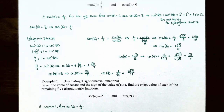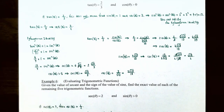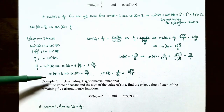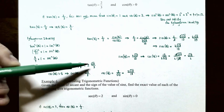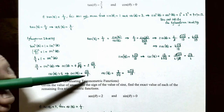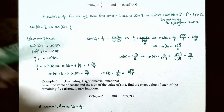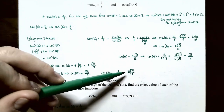Taking the square root of both sides, secant of theta equals plus or minus the square root of thirteen-ninths. Taking the square root of the fraction gives square root of 13 in the numerator and square root of 9, which equals 3, in the denominator. So secant of theta equals plus or minus square root of 13 divided by 3. Since cosine of theta is positive, secant of theta is also positive, giving secant of theta equals square root of 13 divided by 3. Cosine of theta is the reciprocal of secant, so cosine of theta equals 3 divided by square root of 13. Rationalizing the denominator gives cosine of theta equals 3 square root 13 divided by 13.